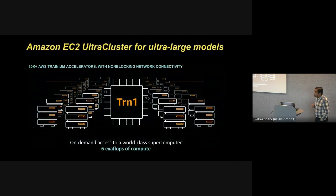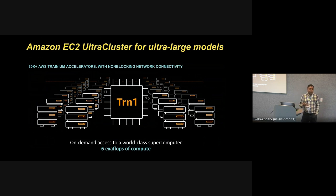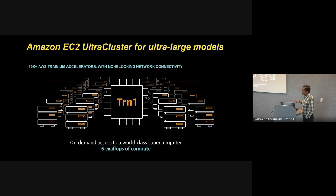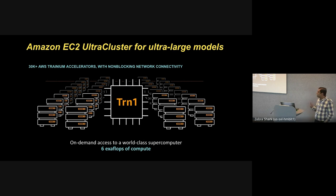It is not just about the chips and instances, but data center scale systems for training today's largest generative models across tens of thousands of accelerators. The network is super important because these accelerators are interconnected at AWS over a massive high-bandwidth network in what we call ultra clusters.